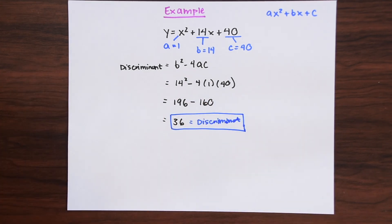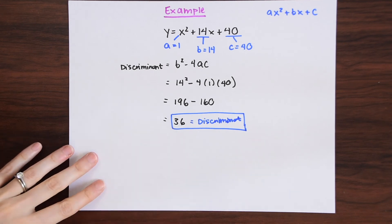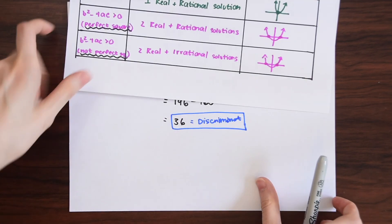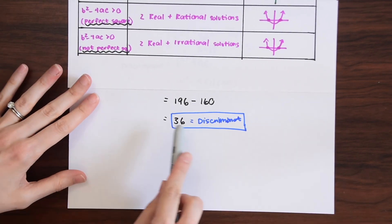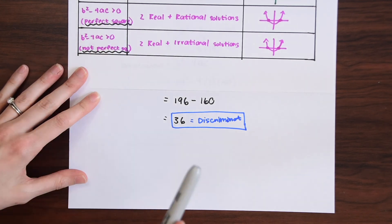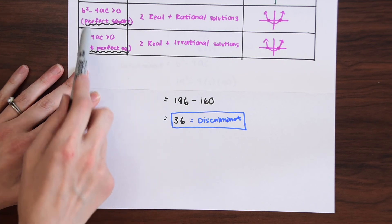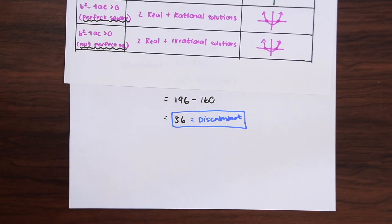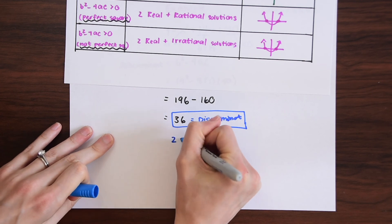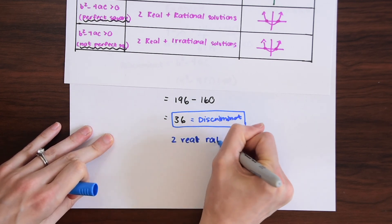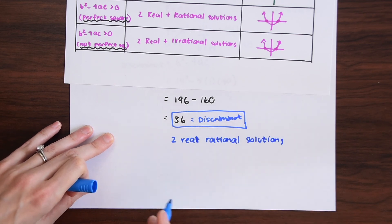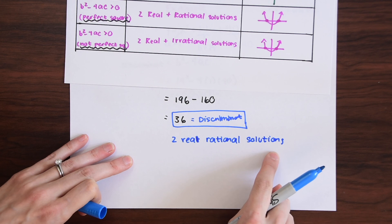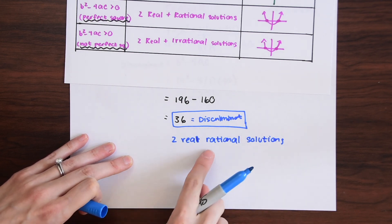The question also wants us to analyze the discriminant and determine how many solutions we'll get. Looking at our chart, we have the number 36 — it's positive, so we look at the positive section. Now we ask: is 36 a perfect square? It is — the square root of 36 is 6 perfectly. So our answer is two real, rational solutions. We found two real solutions and the nature of those solutions is that they are both rational.